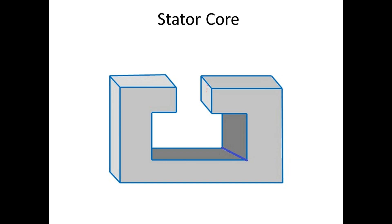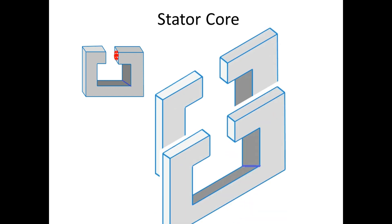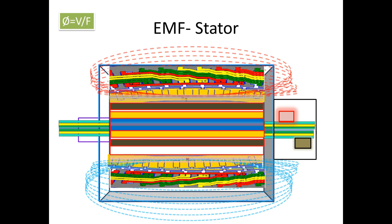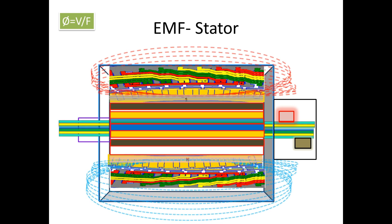To reduce this eddy current, the core is laminated. By this lamination method also, we can only reduce, not isolate this eddy current totally. Now we will see the over flux concept on the stator. If voltage increases or frequency decreases, then the flux is going to increase high.